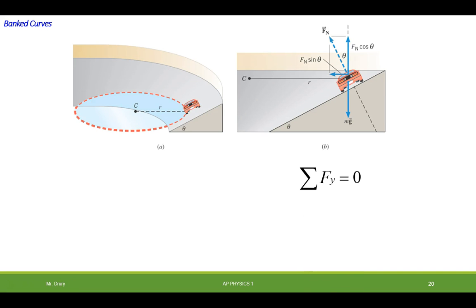Alright, let's look a little closer at this. In the y, assuming up is positive and to the left is positive, then you would have the y component of the normal force acting up and the weight acting down, and the two would be equal to zero. In other words, the normal force cosine of the angle would be equal to mg.